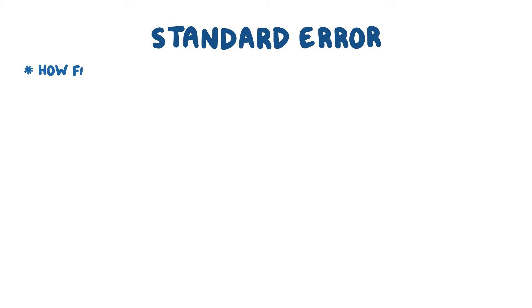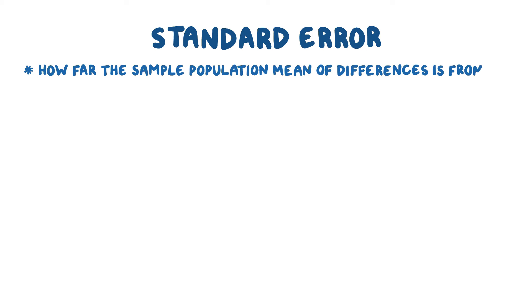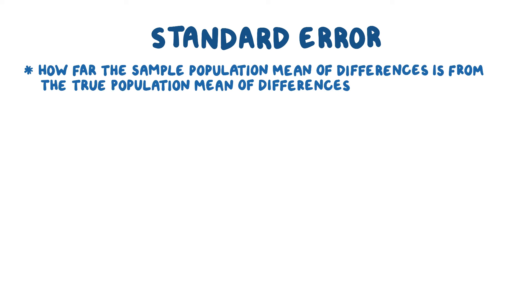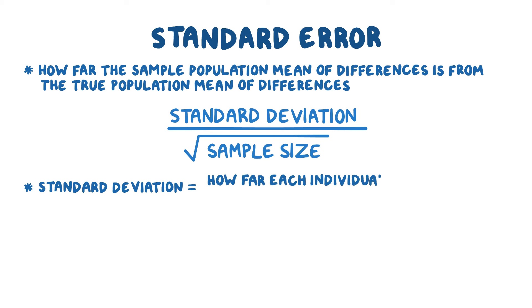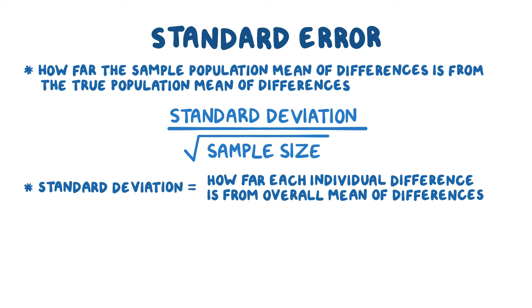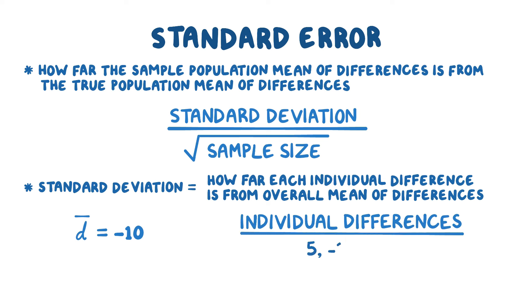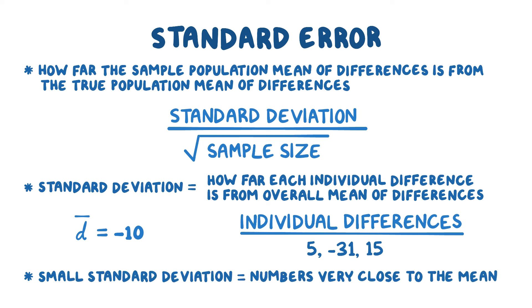Now onto the second part: the standard error of the mean of the differences between the two groups, or simply the standard error. We need to find out, on average, how far the sample population mean of differences is from the true population mean of differences. To do that, we find the standard deviation and divide by the square root of the sample size. The standard deviation measures how far each individual difference in blood pressure is from the overall mean of differences. A large standard deviation means the numbers are very spread out, like if the mean was minus 10 and individual differences included numbers like 5, minus 31, and 15. A small standard deviation means the numbers are very close to the mean, like minus 7, minus 11, and minus 5.